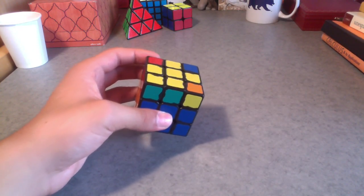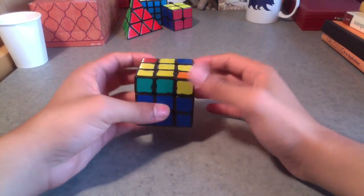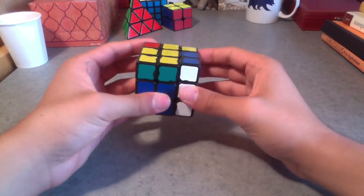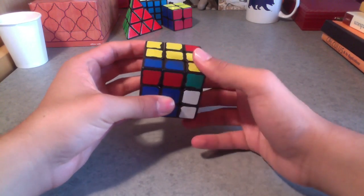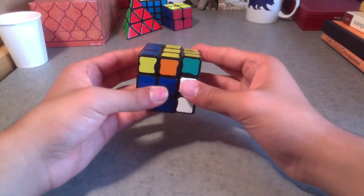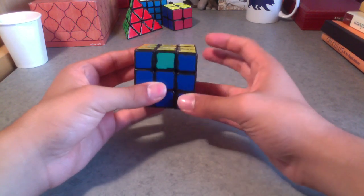And then that's what's basically going to get it solved. So the algorithm is R, U, R prime, U, R, U2, R prime.